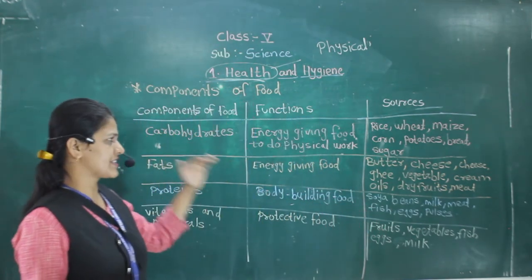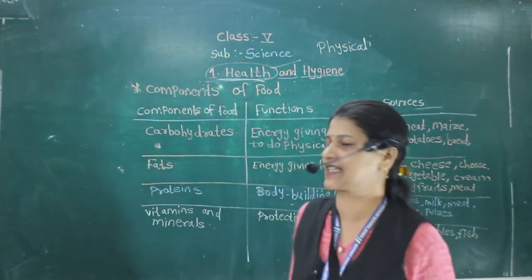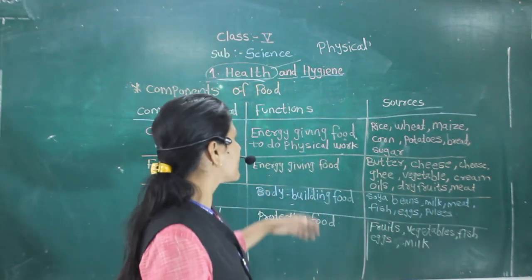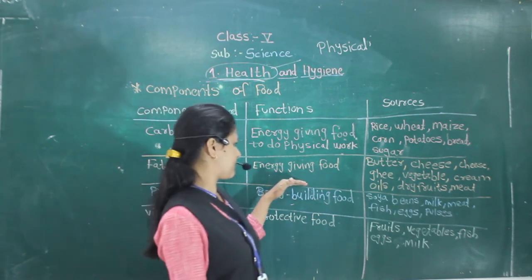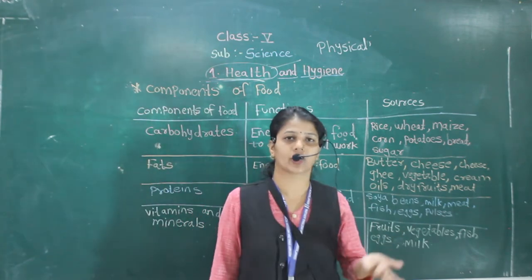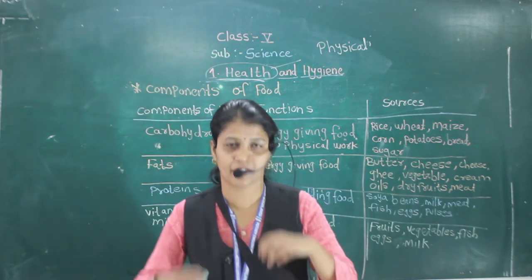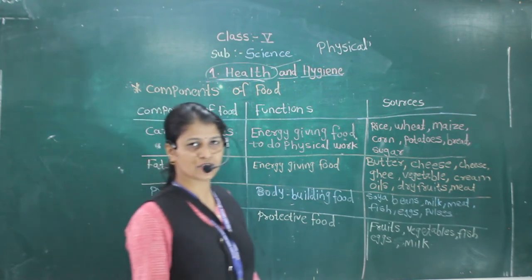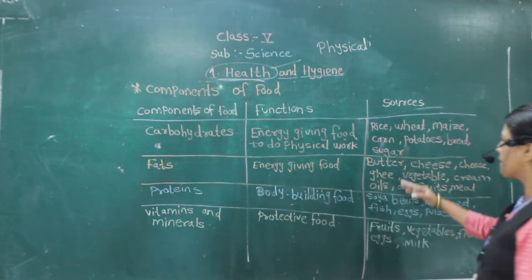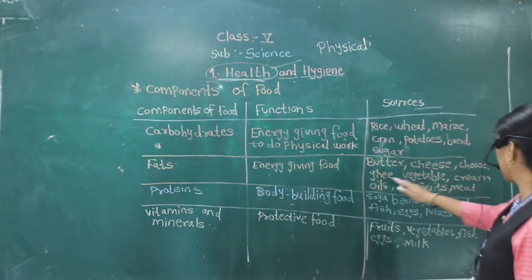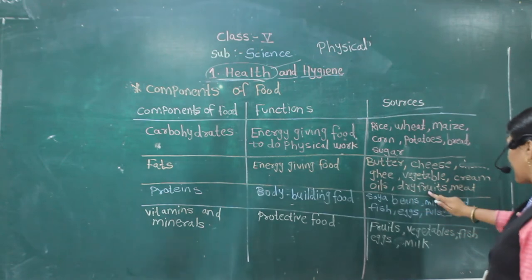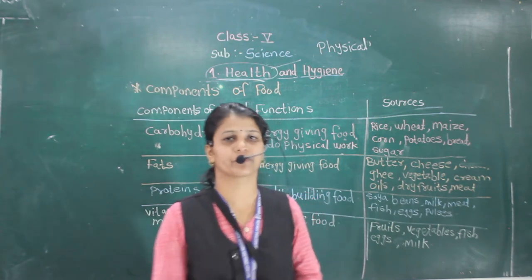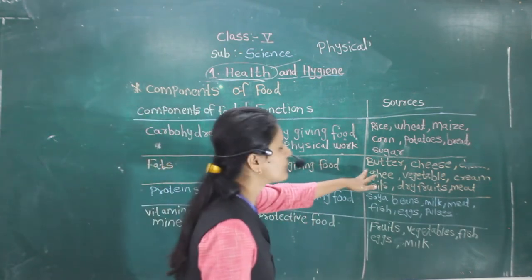Like carbohydrates, fat is also called an energy-giving food. But excess of fat can cause obesity — the person will become very fat. The sources of fat are butter, cheese, ghee, vegetable oil, dry fruits, and wheat. We can get fat from these food items.